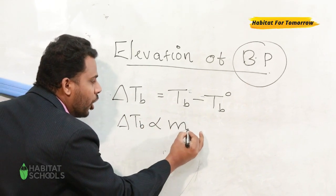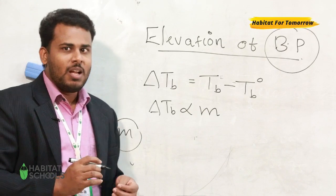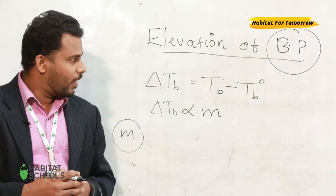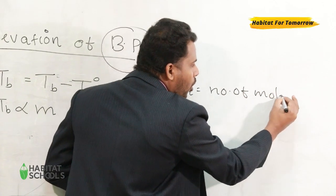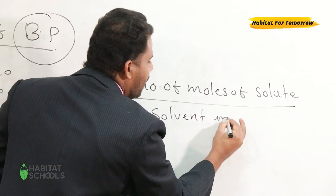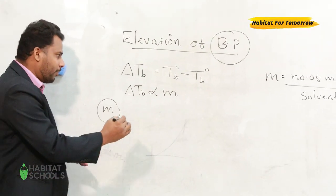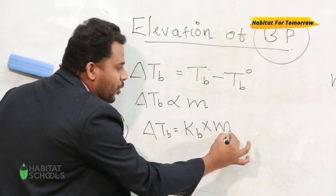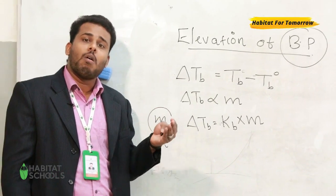Many studies have proved that the elevation in boiling point is directly proportional to molality. Molality is the number of moles of solute present per kilogram of solvent, and the equation for molality M is equal to number of moles of solute divided by solvent in kilograms. To remove the proportionality, we introduce a constant, giving us: ΔTb = Kb × m, where Kb is the molal elevation constant or ebullioscopic constant.